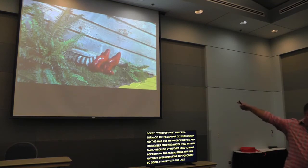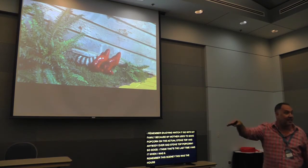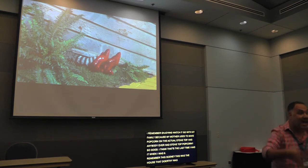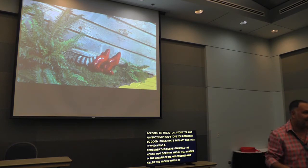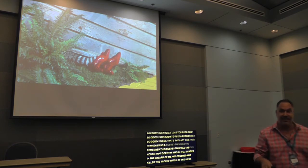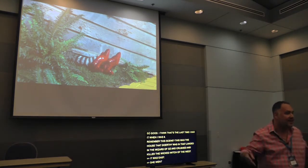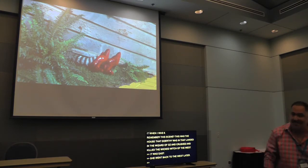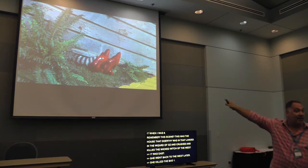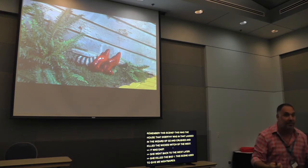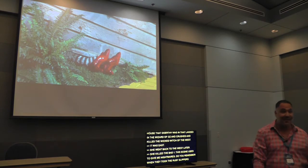This was the house that Dorothy was in that landed in Oz and crushed and killed the Wicked Witch of the East. This scene used to give me nightmares — do you remember when they took the ruby slippers off and the legs curled up under the house? That was scary.